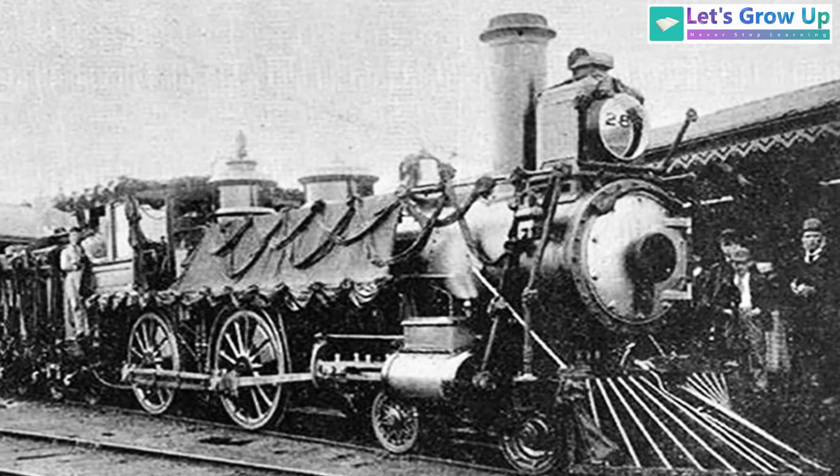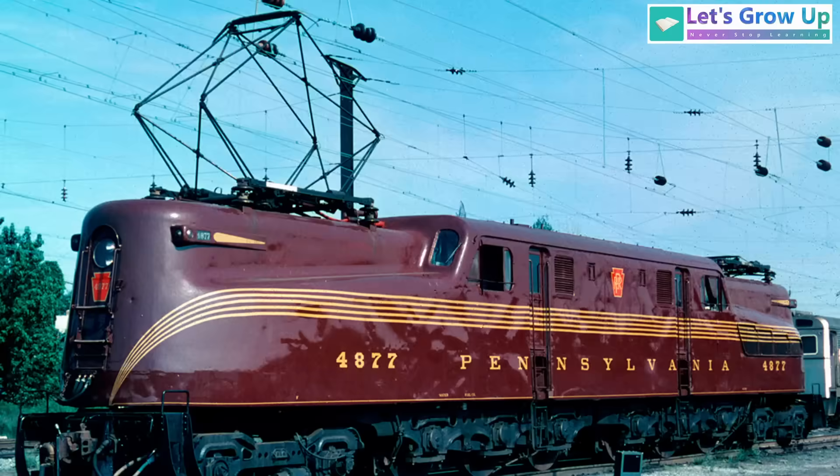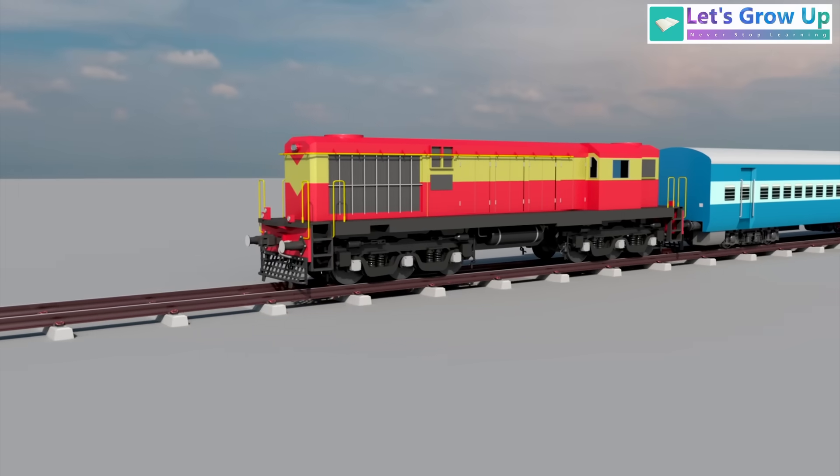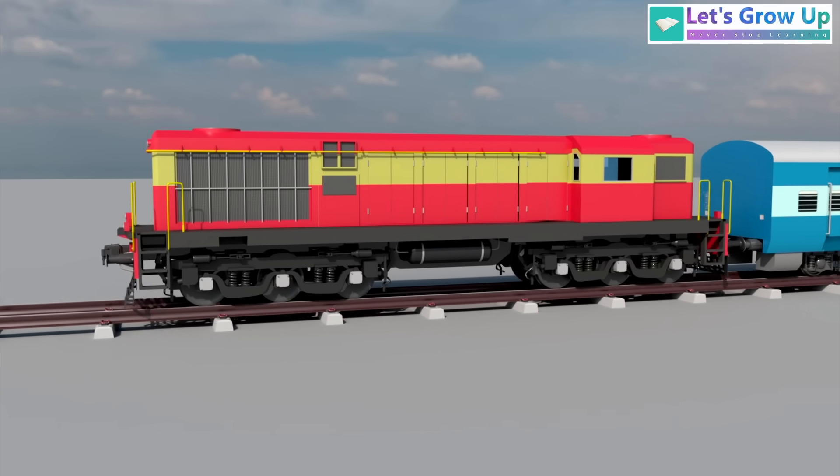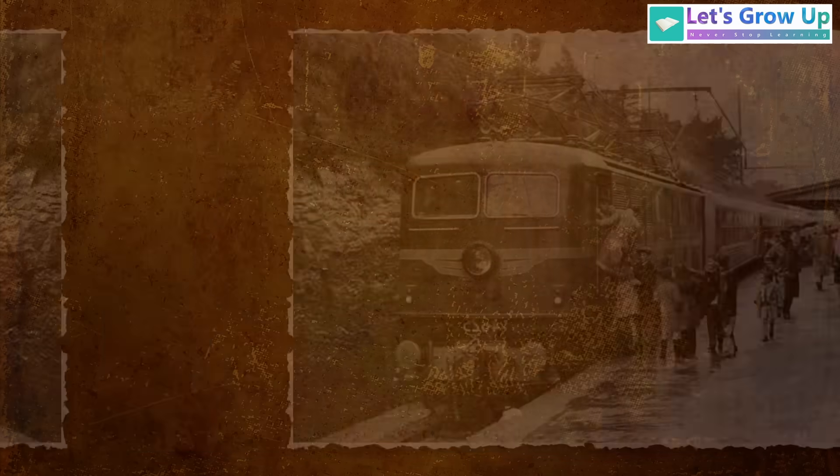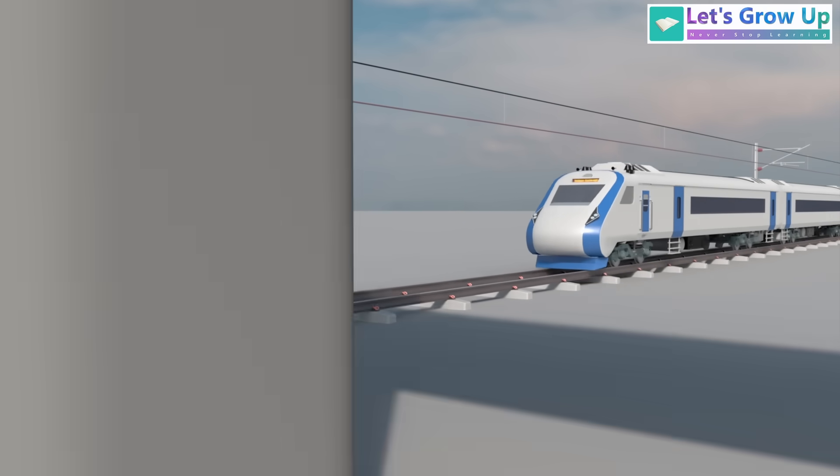The evolution of railway systems has been a continuous race for speed and efficiency. I recall a time when diesel-hauled trains typically operated at speeds around 60 kilometers per hour. The introduction of electric locomotives marked the first significant jump in speed.